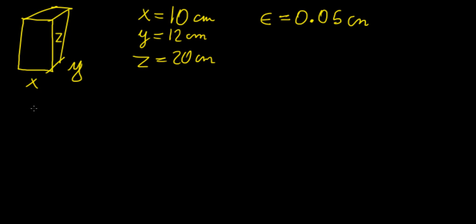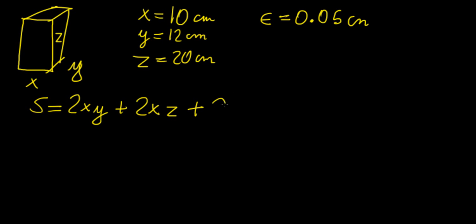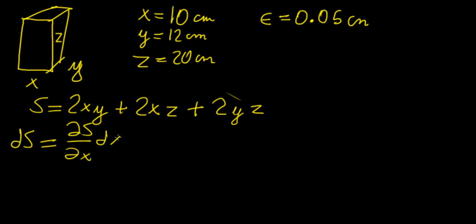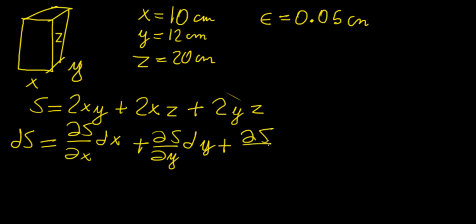First, we want to find an expression for the surface area, which is just the sum of all the faces: 2xy plus 2xz plus 2yz. So we notice it is a function of three variables. Now we want to find the maximum error — the total differential ds — which is equal to the partial of s with respect to x times dx, plus the partial of s with respect to y times dy, plus the partial of s with respect to z times dz.